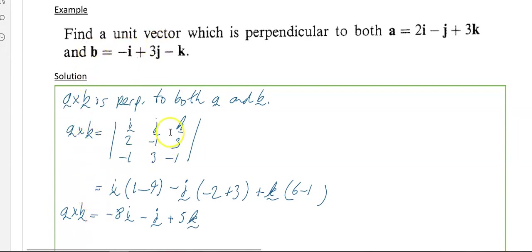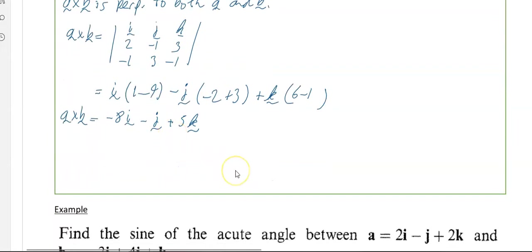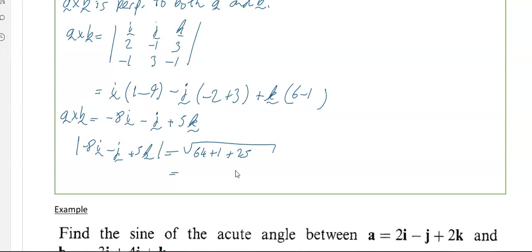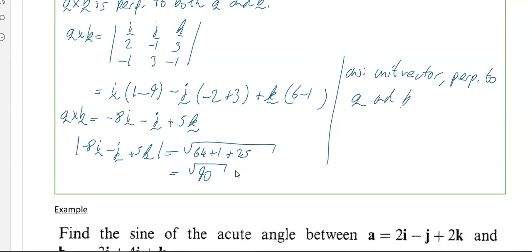But the question asks for a unit vector, so we need the modulus. The modulus of minus 8i minus j plus 5k equals the square root of: 64 plus 1 plus 25, which is the square root of 90. So the answer — the unit vector perpendicular to a and b — is one over root 90, times the vector minus 8i minus j plus 5k.